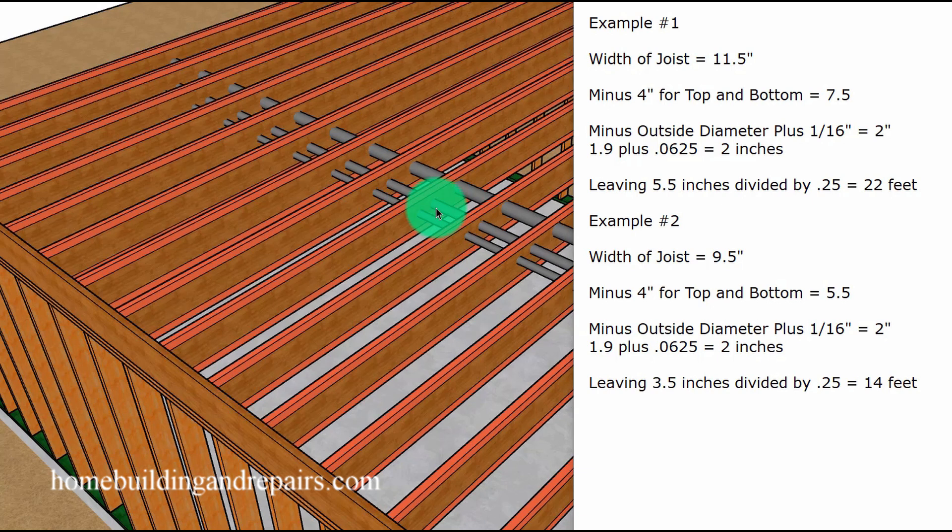So again, it's not just the distance here that we're looking for to provide us with a quarter of an inch per foot slope. It will also be whether or not we can drill a hole in the joist, something that's going to be smaller than the maximum allowable diameter.